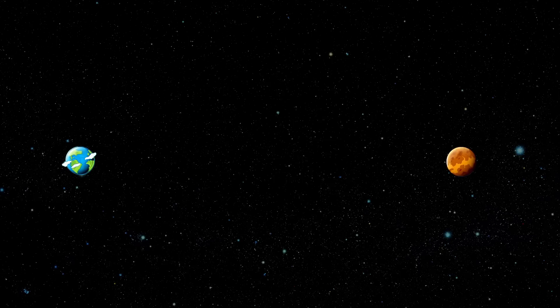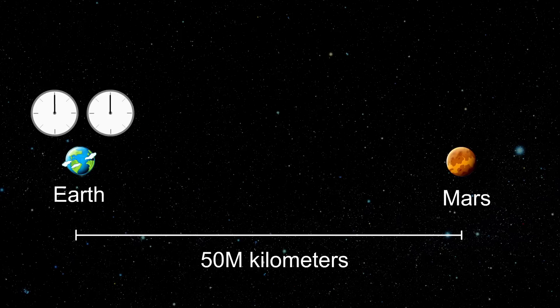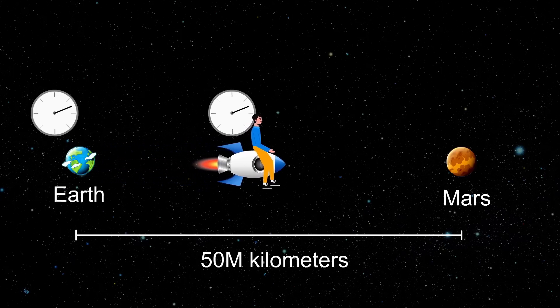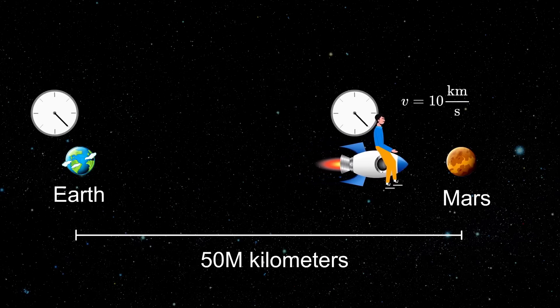Imagine two planets, for example Earth and Mars, separated by the distance of 50 million kilometers. We have two synchronized clocks and we want to slowly transport one to Mars with the classical velocity of a typical rocket, like 10 kilometers per second.